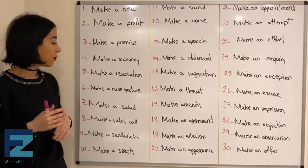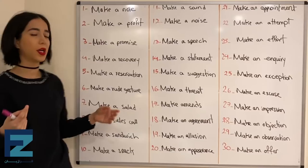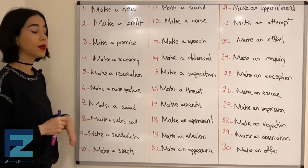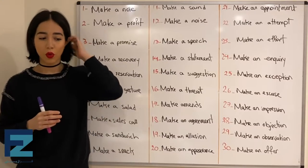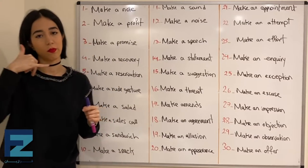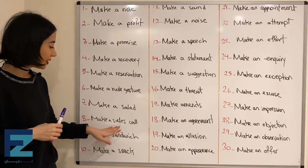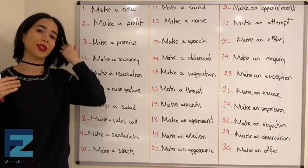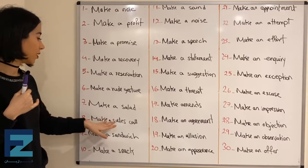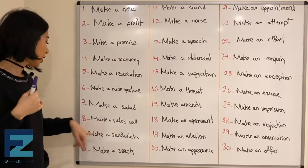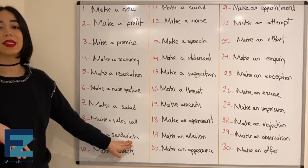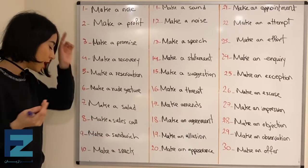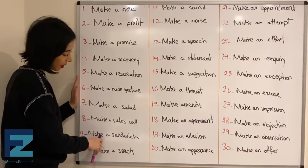Number seven: make a salad — to prepare a salad. Number eight: make a sales call — to make a call to sell something, زنگ فروش زدن. مثل شرکت‌های بازاریابی که زنگ می‌زنند. Number nine: make a sandwich — to prepare a sandwich, ساندویچ آماده کردن.